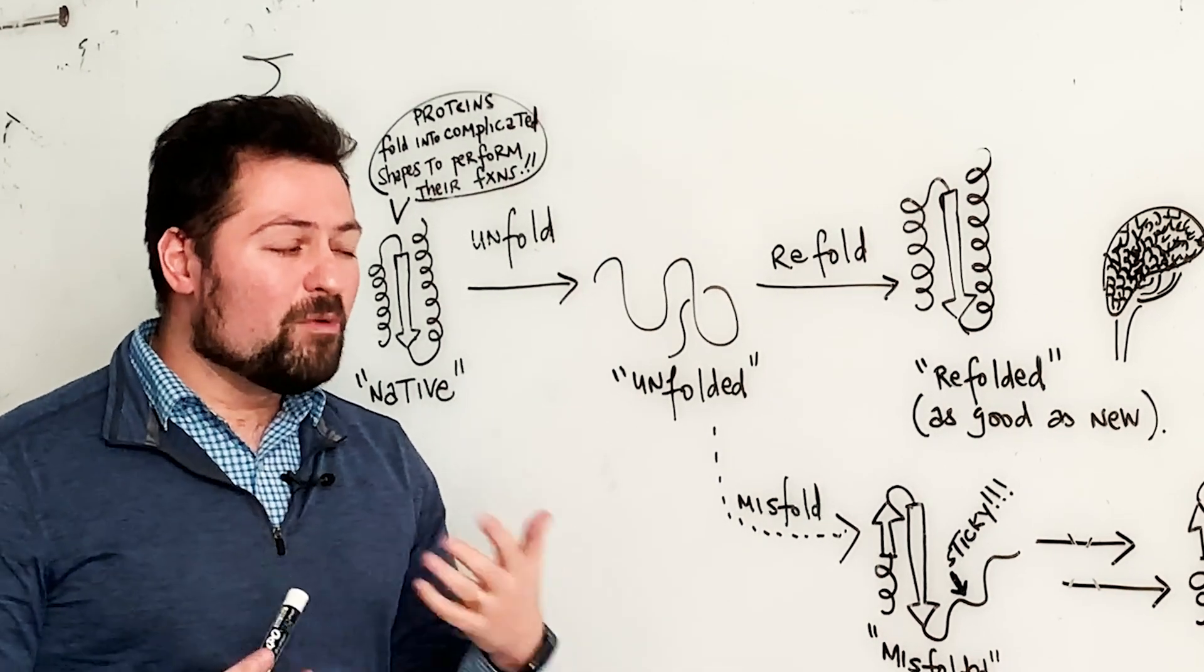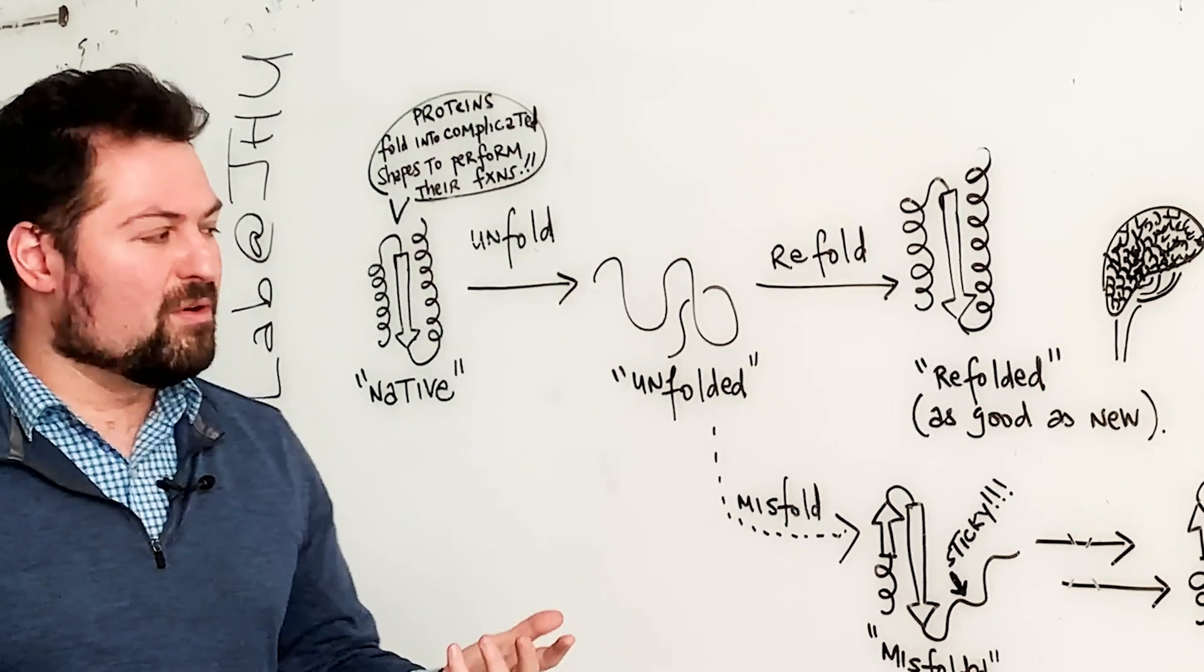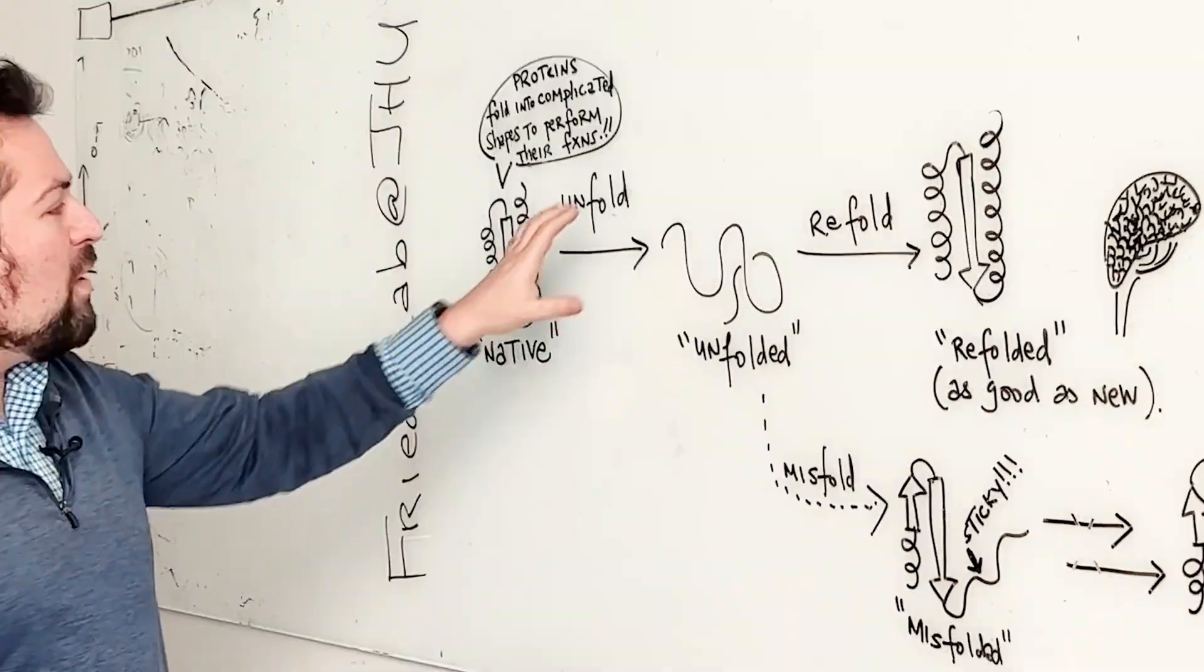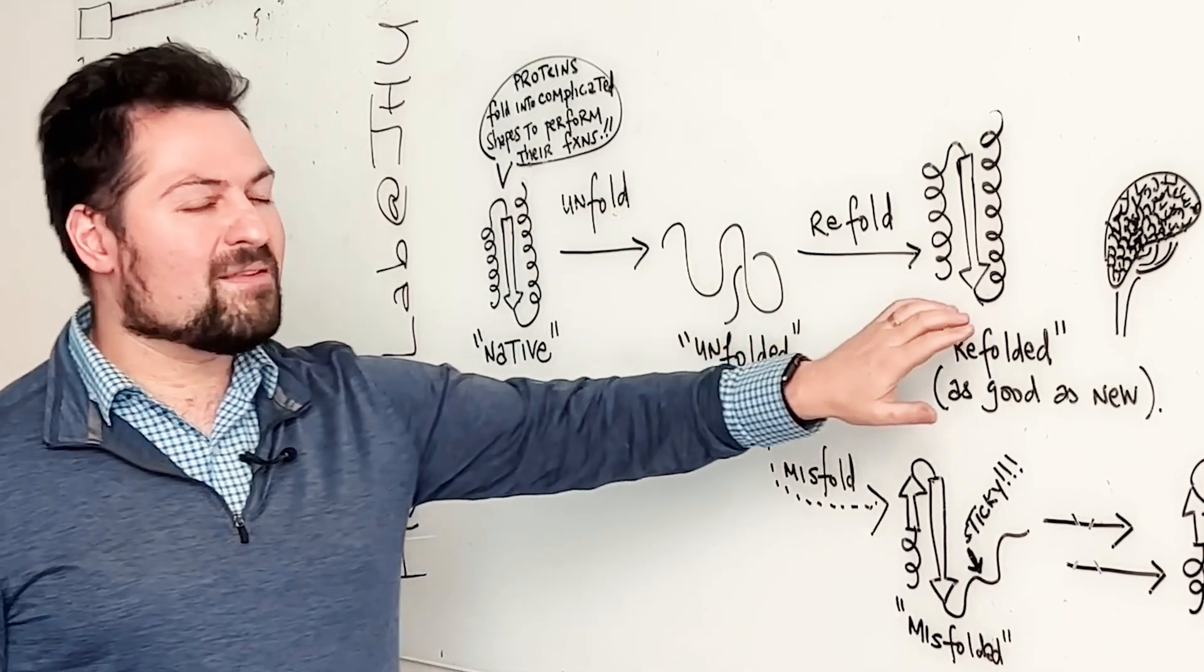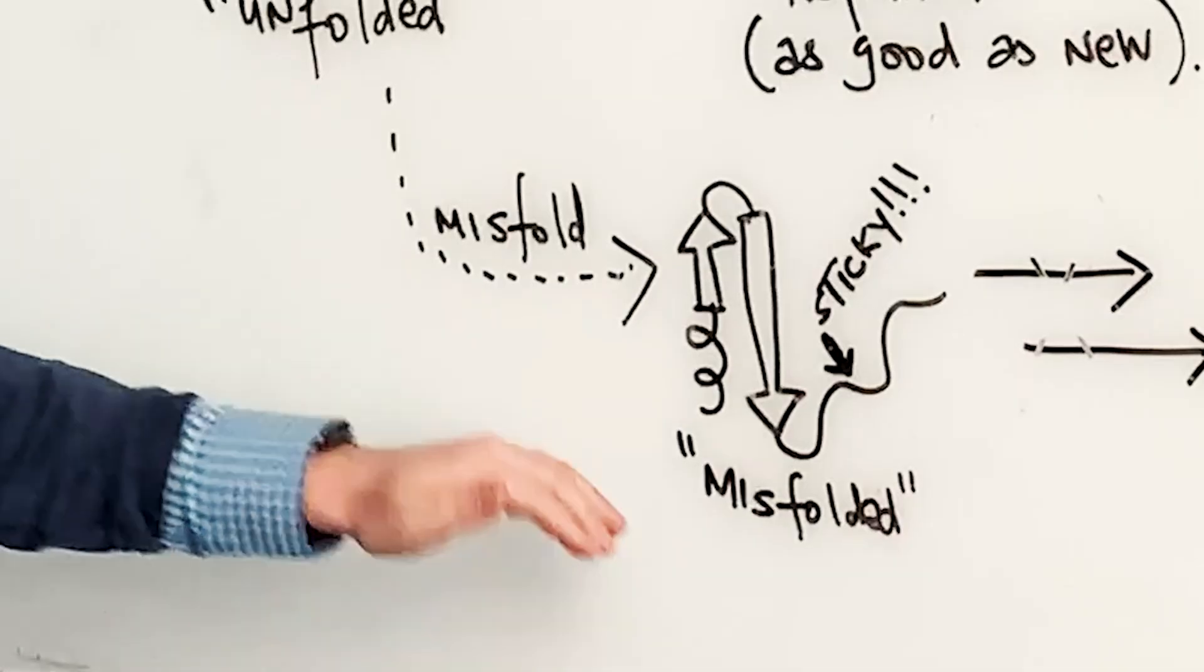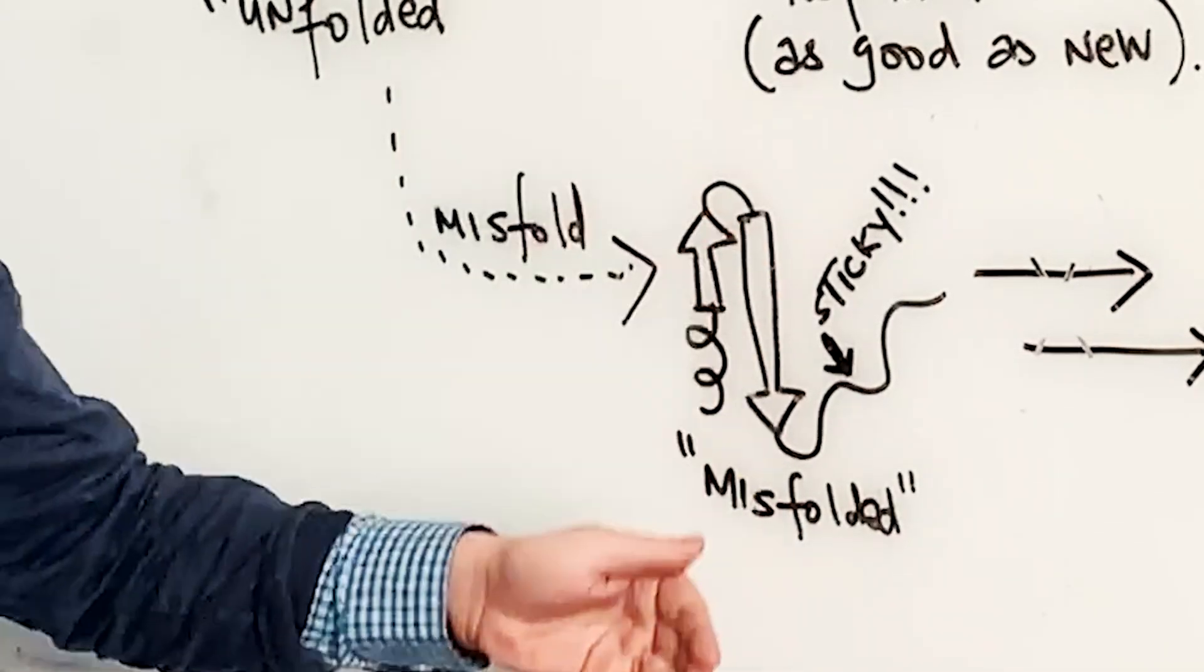But in our lab, we're really interested in studying the proteins that don't follow those rules, meaning that if you unfold them, rather than being good at snapping back to their native state, they instead fail to return to their original conformation, which we would call a misfolded state.